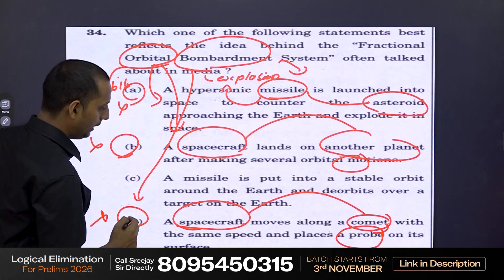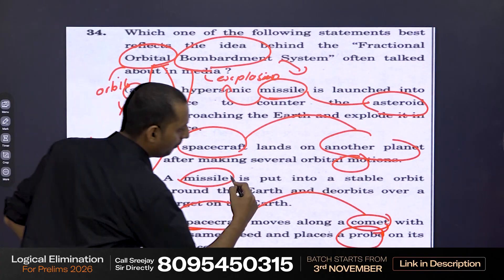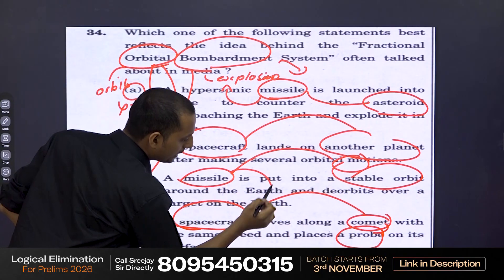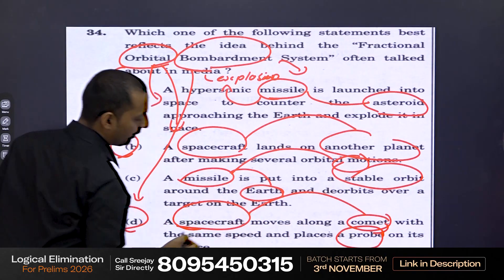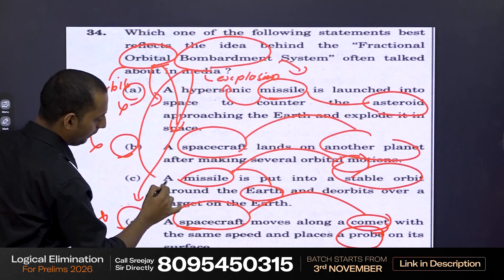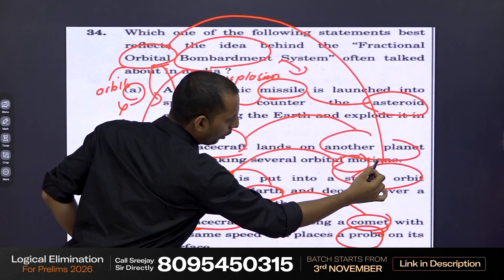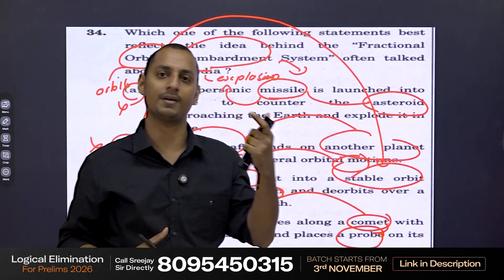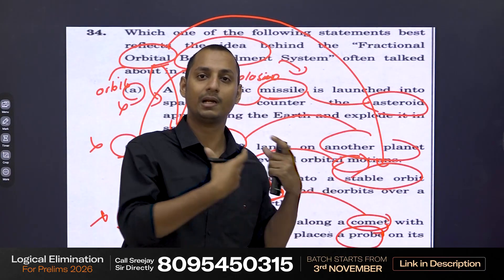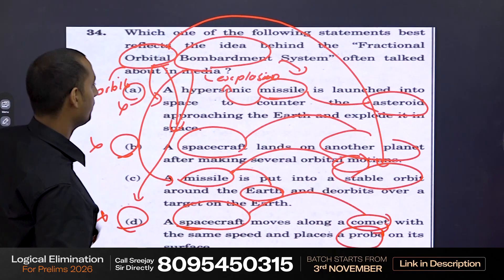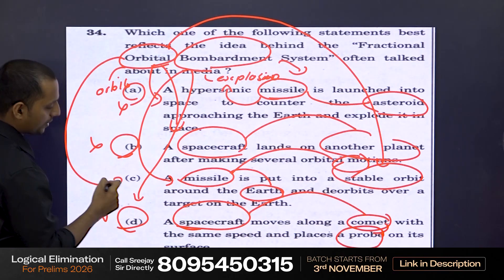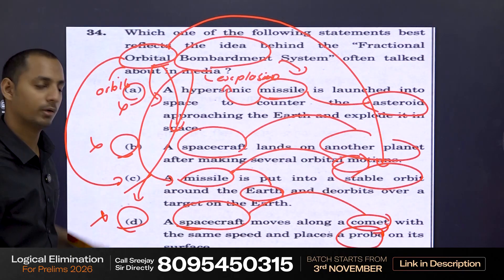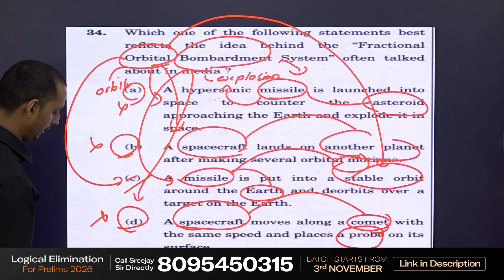But what about option C? It talks about a missile which has an orbit — put into the atmosphere — and targets something on the earth. So this missile explodes and also has an orbit. Therefore, it directly suits the term 'fractional orbital bombardment,' which has both resemblance to orbit and also bombardment. Since it satisfies both orbit and bombardment, we can go with option C as the answer.